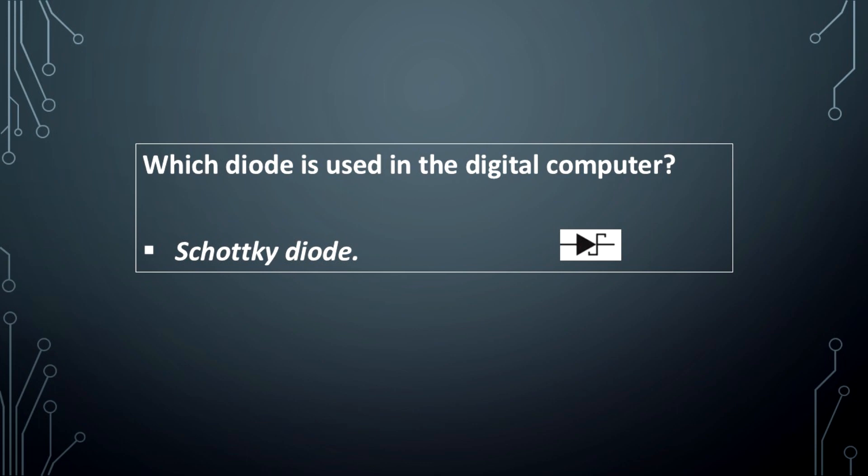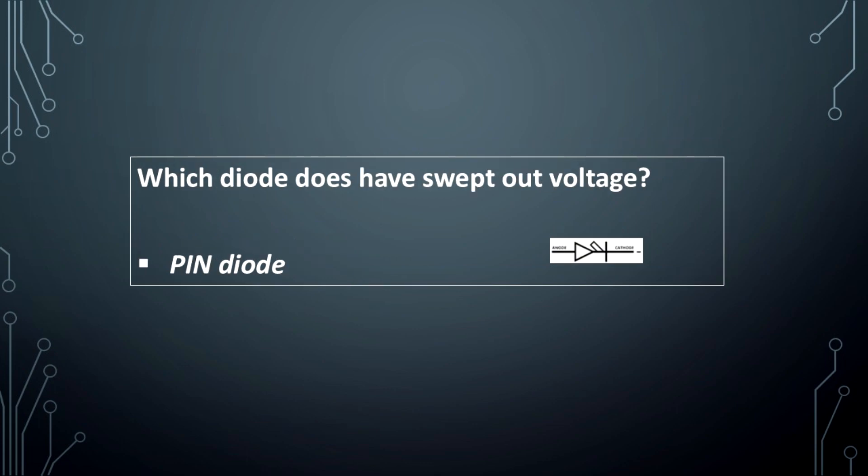Which diode is used in oscillator and amplifier circuits? Tunnel diode. What is the illumination diode? LED.